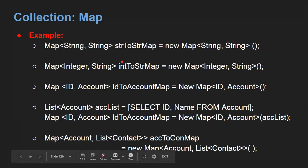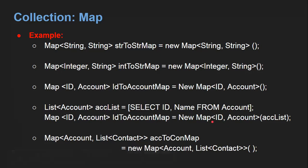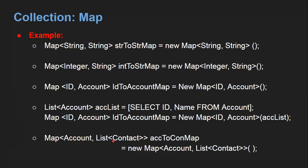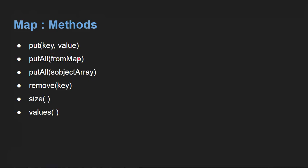Here you can see different examples of how we can create maps. The first example has keys as string and values as string. The second has keys as integer and values as string. The third has keys as ID related to account and values as account record. The fourth fetches account records into a list and assigns that list to the constructor of the map, which automatically converts it into a map with key as ID and values as account record. The last example has keys as account records and values as list of contacts.